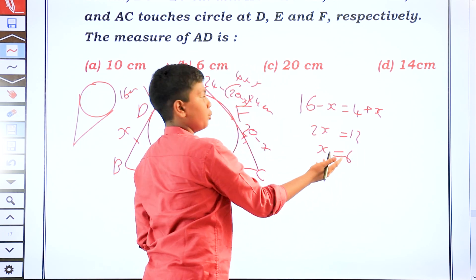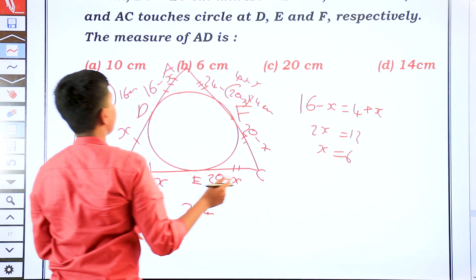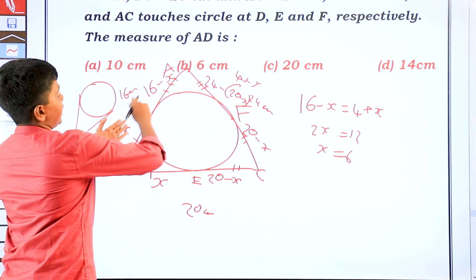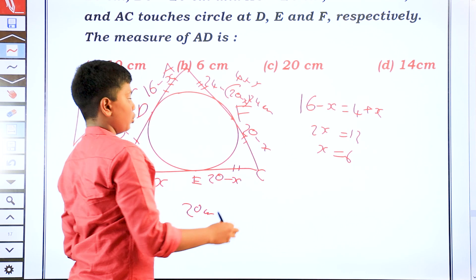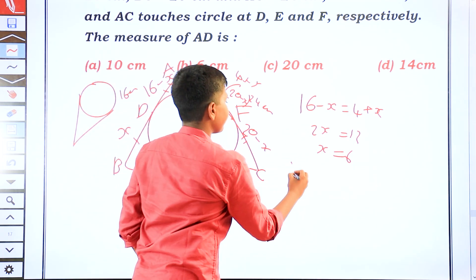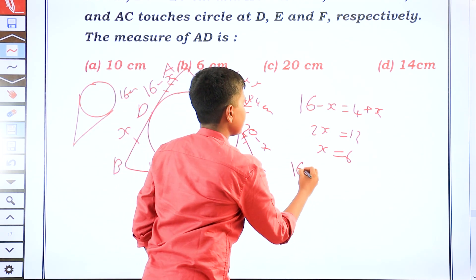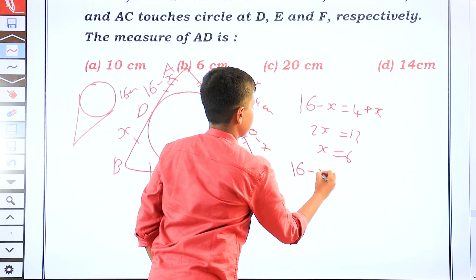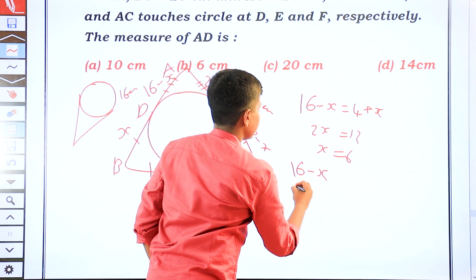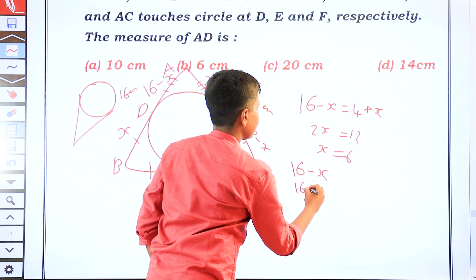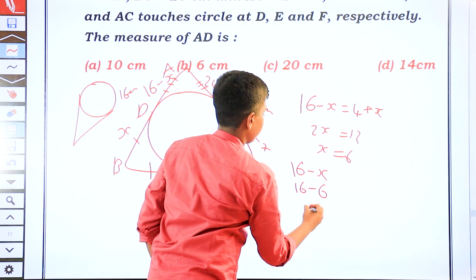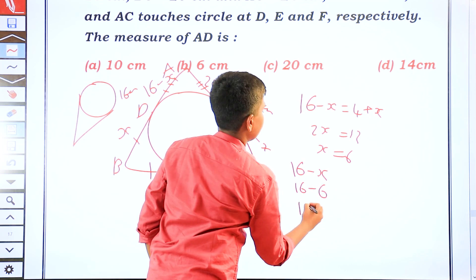So x equals 6. Therefore AD equals 16 minus x equals 16 minus 6 equals 10 centimetres.